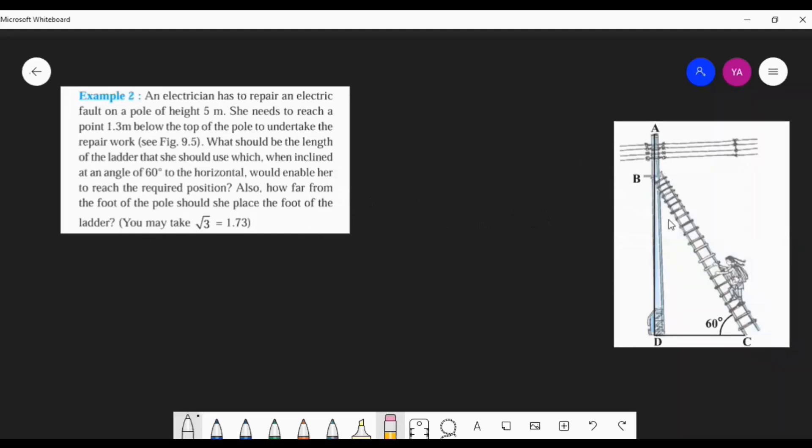From the question you should be able to draw the picture. An electric post is there and the height of the electric post is given, that 5 meter. The electrician wants to put a ladder at an angle of elevation of 60 degree with the ground. It is asked to find out the length of the ladder. If she wants to keep the ladder at 60 degree angle of elevation, what should be the height of the ladder? So the top of the ladder should reach 1.3 meter below the top of the post. We cannot keep the ladder to point A, right? That is danger.